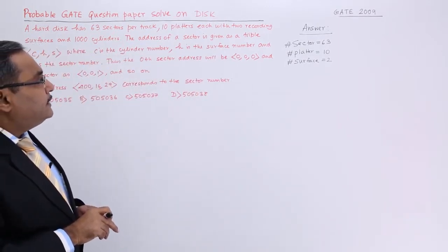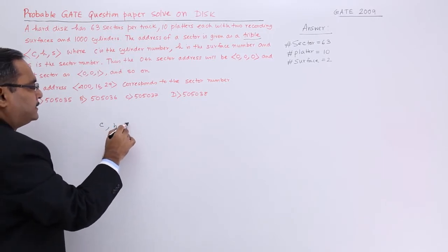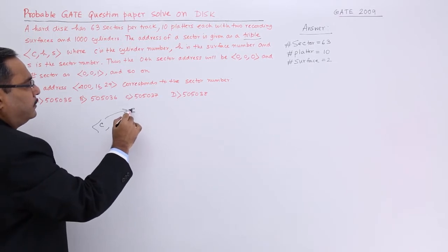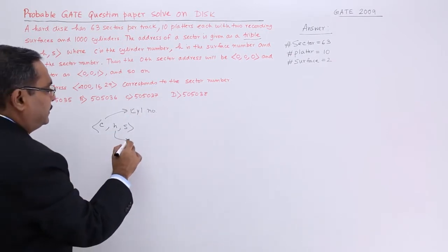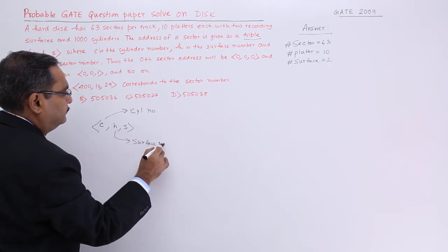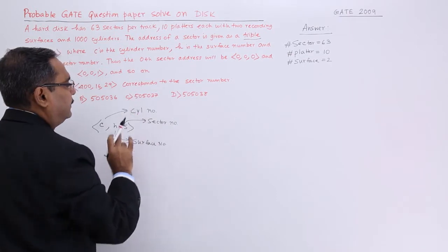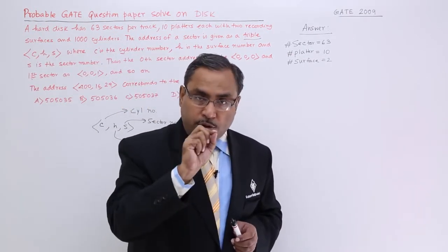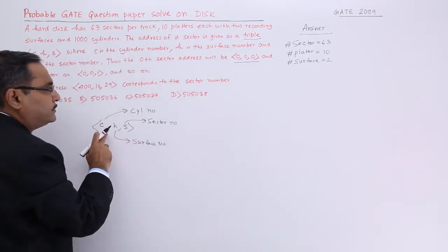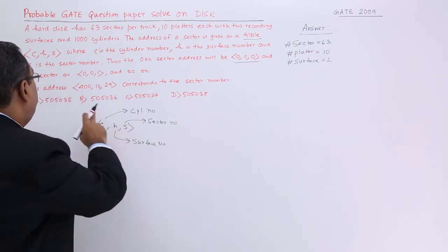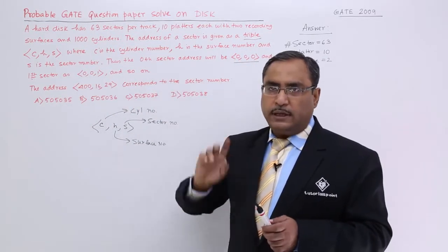The address of a sector is given as a triple C, H, S — where C is the cylinder number, H is the surface number, and S is the sector number. They will be coming in this order only as a triple. Thus, the 0th sector will be written as (0,0,0), that means 0 cylinder number, 0 surface number, and 0 sector number. The first sector will be denoted as (0,0,1) and so on.